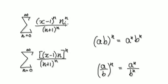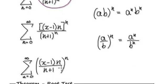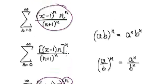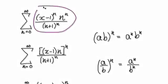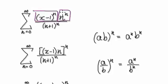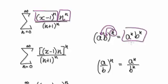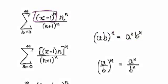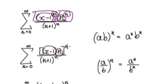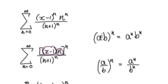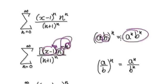So we're going to use the root test. Our aim is to rewrite this as something to the power of n. You start with this expression — you've got one thing multiplying another thing. If you work backwards, since this is to the power of n and this is to the power of n, you can simply get this times this, all to the power of n.